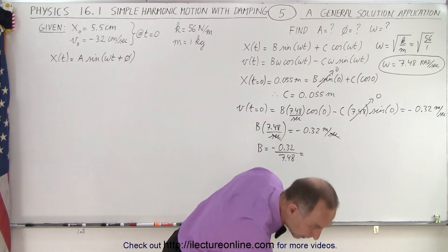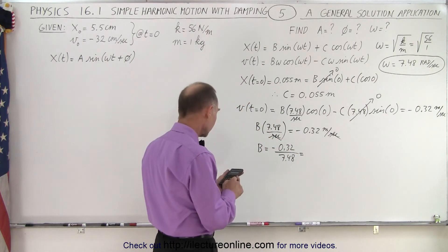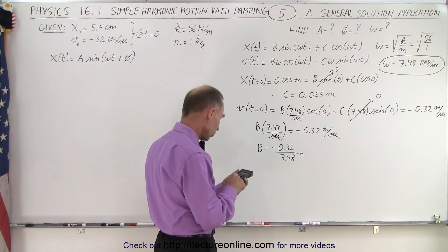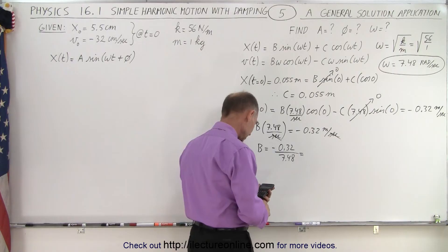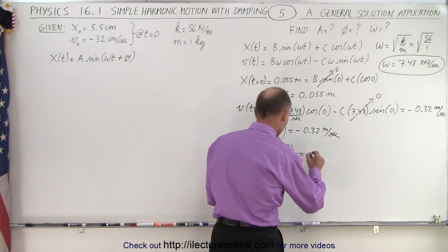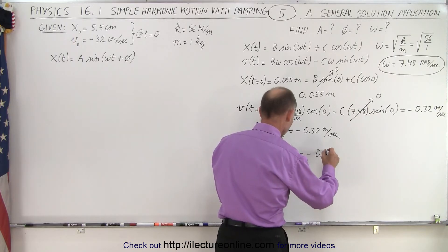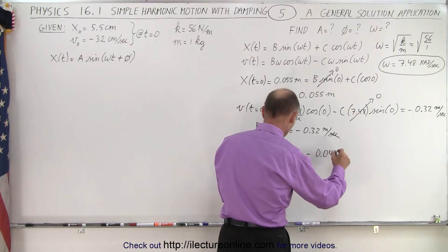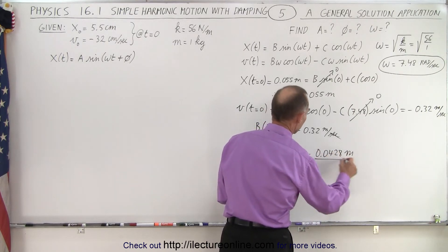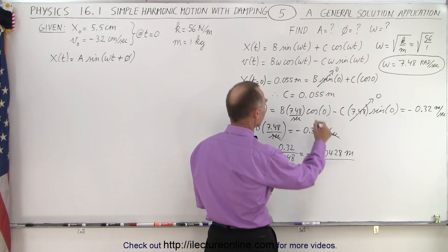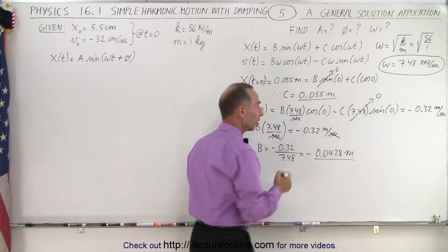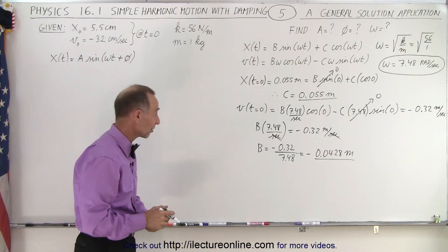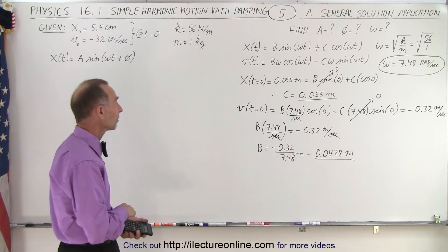That means that B is going to be equal to minus 0.32 divided by 7.48. 0.32 divided by 7.48, that's equal to minus 0.0428 meters. I thought B was going to be much smaller than C, but it's not, they're about the same size.